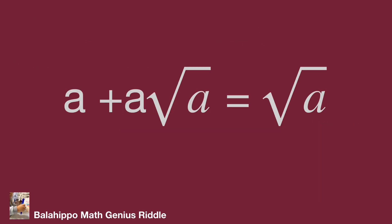The given equation is: A plus A times square root of A equals square root of A. Analyze each item of this equation. There are two elements: A and square root of A. Note that A equals square root of A squared. If we treat square root of A as a factor for both A and square root of A, it could be a good approach to find the answer.